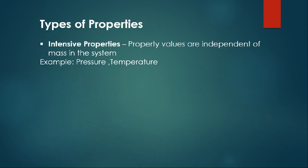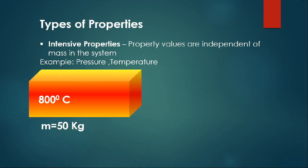Properties are mainly classified into two types: intensive properties and extensive properties. Intensive properties are independent of the mass of the system — if you take some amount of mass from the system the property value remains the same. Examples are pressure and temperature. Consider a metallic cube that is heated to 800 degrees Celsius with a mass of 50 kilograms.